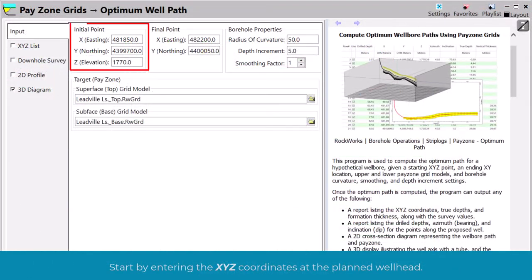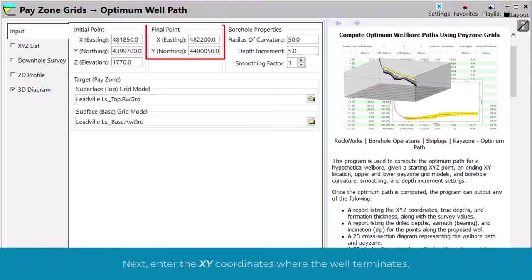Start by entering the XYZ coordinates at the planned wellhead. Next, enter the XY coordinates where the well terminates.